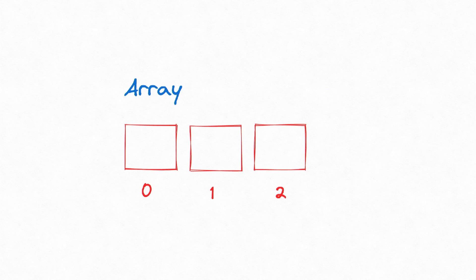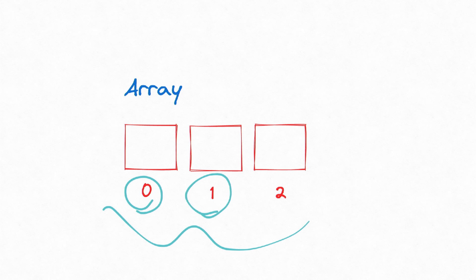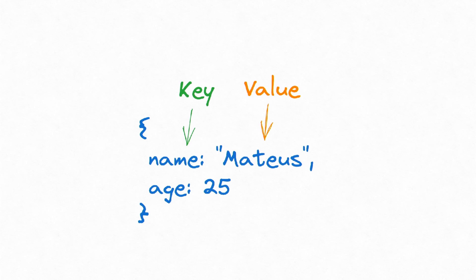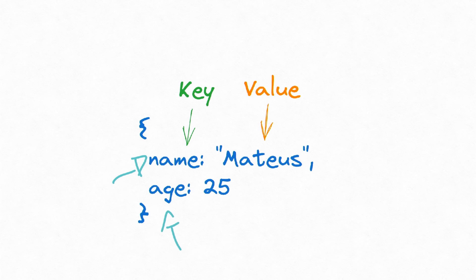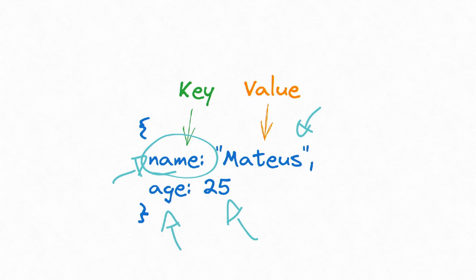An array has a very simple structure: a continuous block of memory with items, and we use indexes to access those items. There are no gaps between indexes and it starts from zero — that's a regular array. Sometimes we want to represent key-value pairs; for example, name and age as keys, and Matthias and 25 as values. Although PHP abstracts that for us using the same syntax, they are very different, because we cannot have a string as an index.